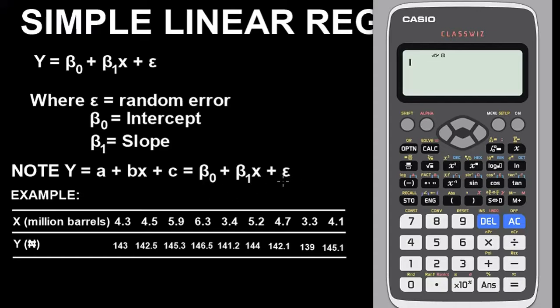Note, Y = a + bx + c is the same as β₀ + β₁x + ε. This is very important guys, because there are some questions you will see where the examiner chooses to use this formula that involves a + bx + c in place of β₀ + β₁x + ε. The two of them mean the same thing. Don't be confused with either of them. It depends on what the designer wants to use.